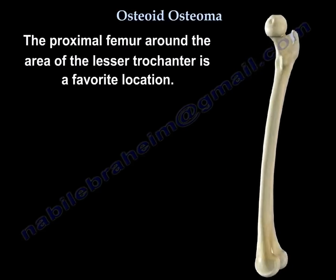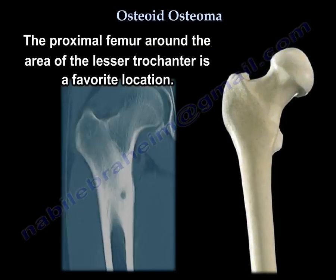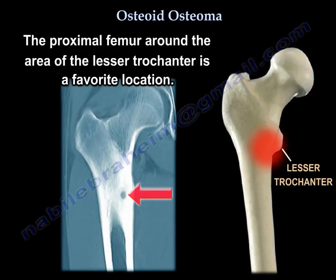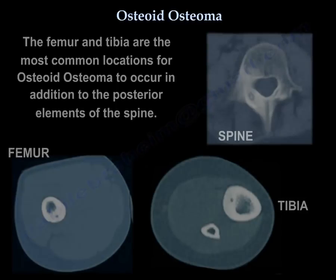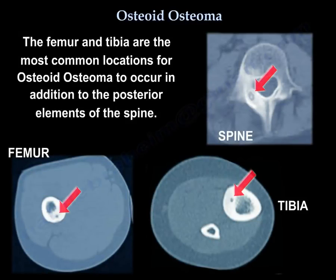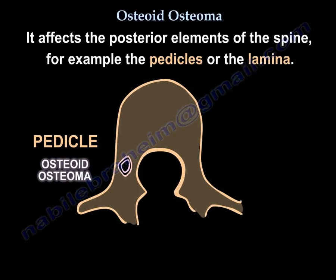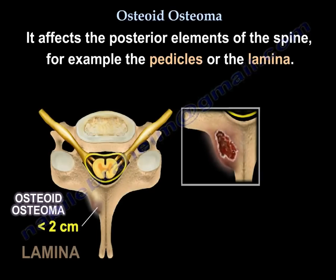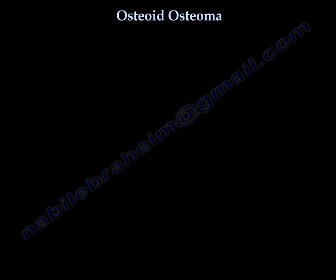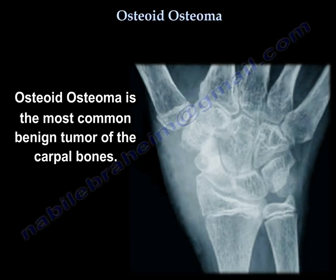The proximal femur around the area of the lesser trochanter is a favorite location. The femur and tibia are the most common locations, in addition to the posterior elements of the spine — for example, the pedicles or the lamina. Osteoid Osteoma is also the most common benign tumor of the carpal bones.